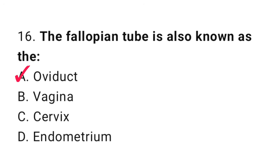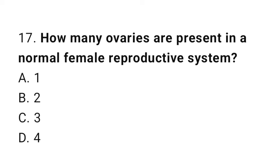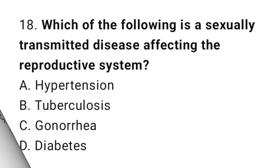Question number 17: How many ovaries are present in a normal female reproductive system? The correct answer is B, 2. Question number 18: Which of the following is a sexually transmitted disease affecting the reproductive system? The correct answer is C, gonorrhea.